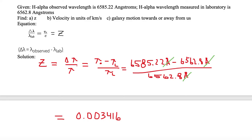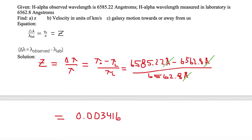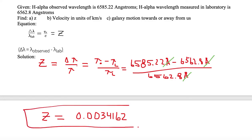Let's calculate the number of significant digits. The observed wavelength has 6 significant digits, and the lab wavelength has 5, so we choose 5 significant digits — the fewest of the two. Our Z value to 5 significant digits is 0.0034162, and that is our redshift parameter Z. That solves part A.